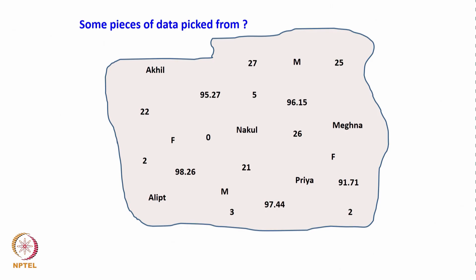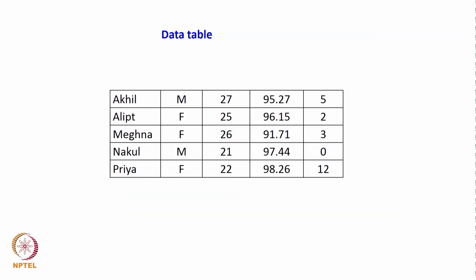From this we can understand that data need not only be numbers — even names could represent data, even symbols could represent data. For example, M and F represent male and female, which are symbols or notations to represent data, whereas we have names like Meghna or Nakul and so on. This is some piece of data picked up, and we now bring all this data into a table where we sort and categorize it.